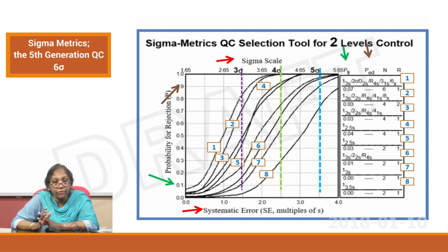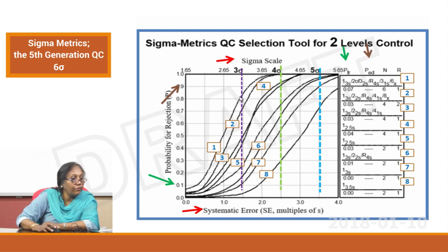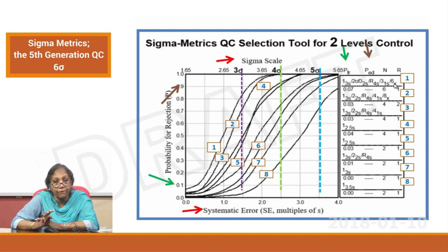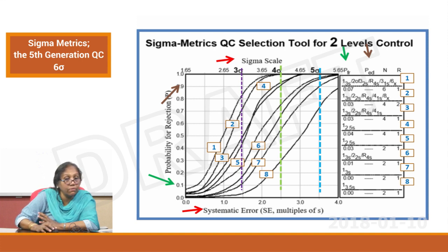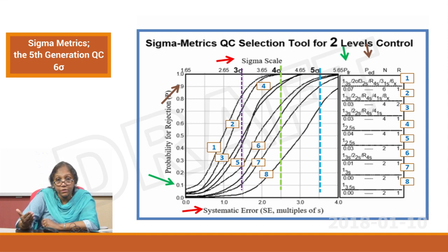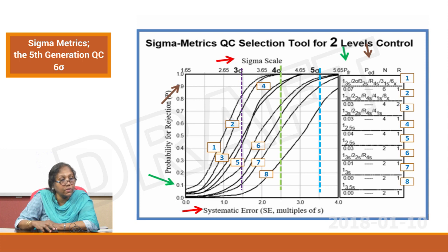For a 3 sigma performance, the best error detection is about 82 percent. For that 82 percent I have to follow rule set number 1, which means I have to follow 1-3S, 2-of-3-2S, R-4S, 3-1S, and 6X — all these rules will have to be followed for that analyte to remain under control. That is a lot of rules, and you have to do an N of 6 with an R of 1. Because to have a 6X rule, you need 6 measurements at one go — unless you have 6 readings when you review at 10 o'clock to decide whether to accept or reject the run, you cannot follow a 6X rule.